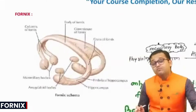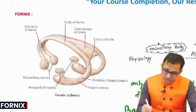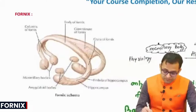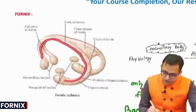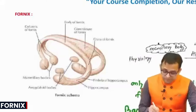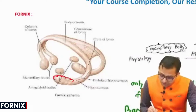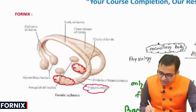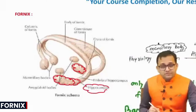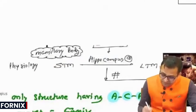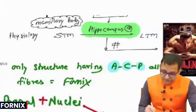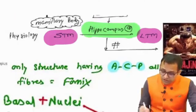We are going to talk about one very important structure: the fornix. This fornix starts from a mass which is seahorse-like in appearance, known as the hippocampus. Remember, the hippocampus is the site where short-term memory is converted into long-term memory.